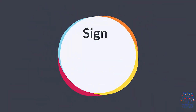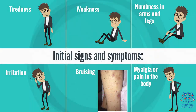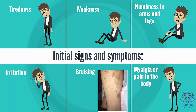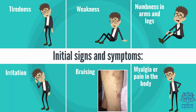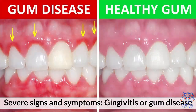Signs and Symptoms. Initial signs and symptoms include: tiredness, weakness, numbness in arms and legs, irritation, bruising, myalgia or pain in the body, and decrease in appetite.